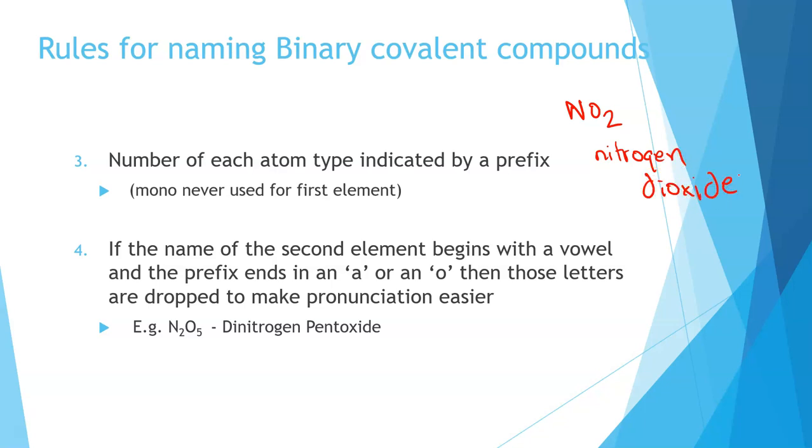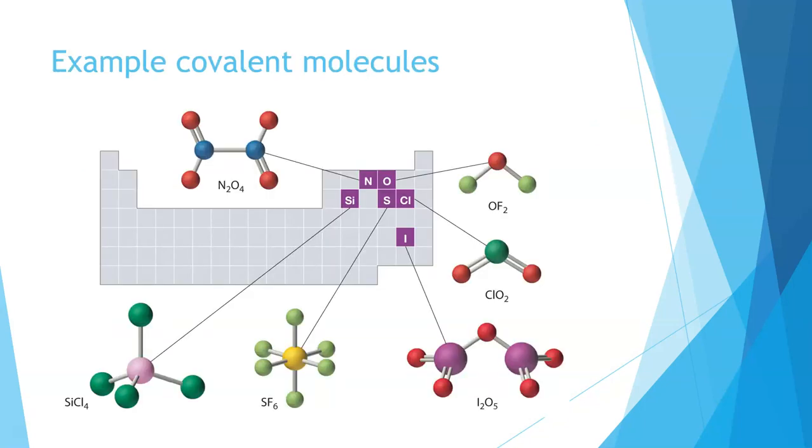If the second element begins with a vowel, then the A and the O, just to make it easier, we drop the A from the prefix. So di-nitrogen pentoxide rather than di-nitrogen pentaoxide. So if we have a look at these, here we would have di-nitrogen tetraoxide, oxygen difluoride, chlorine dioxide, di-iodine pentoxide, sulfur hexafluoride, silicon tetrachloride.